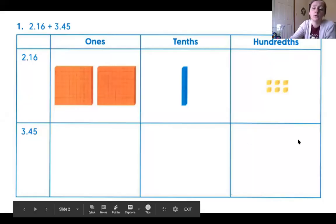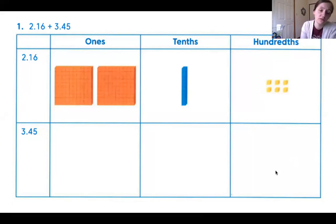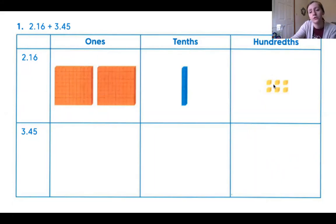The first problem I want to look at is problem number one on day one. They're asking us to add two and sixteen hundredths plus three and forty-five hundredths. When you draw or model decimals using base 10 blocks, the ones are represented by the flats — those are made up of 100 little cubes. The tenths are the longs or rods, made up of ten cubes. And the hundredths are the individual little cubes, because it takes a hundred of them to equal one whole.